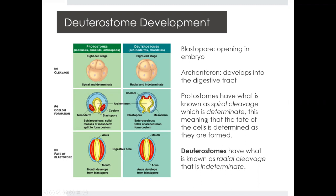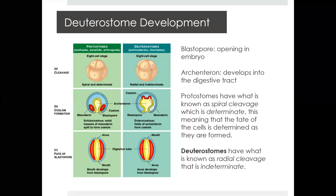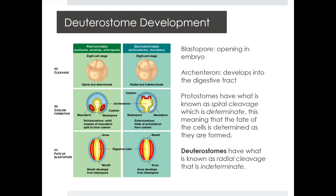Protostomes have spiral cleavage, which is determinate, meaning that a cell's fate is decided as soon as it's made. Whereas in deuterostomes, they have indeterminate cells, meaning that a cell's fate is not decided — a cell can be any type of cell up until a certain point of development. You can think of it like stem cells, which have the potential to be anything. So deuterostomes have radial cleavage that is indeterminate.